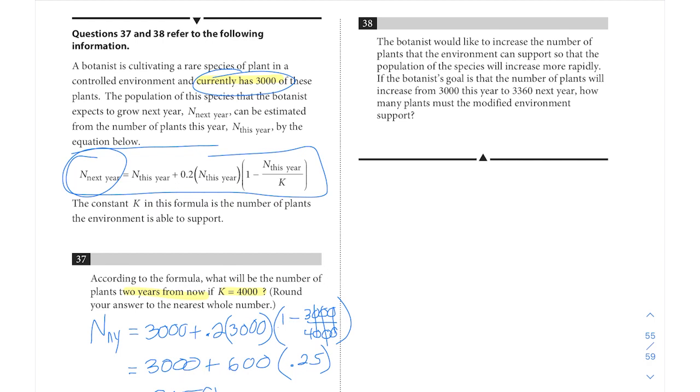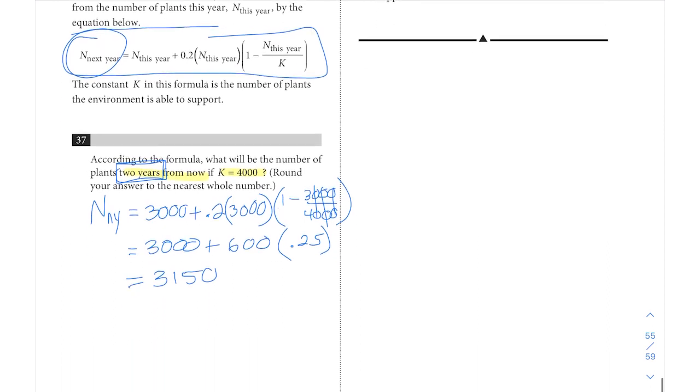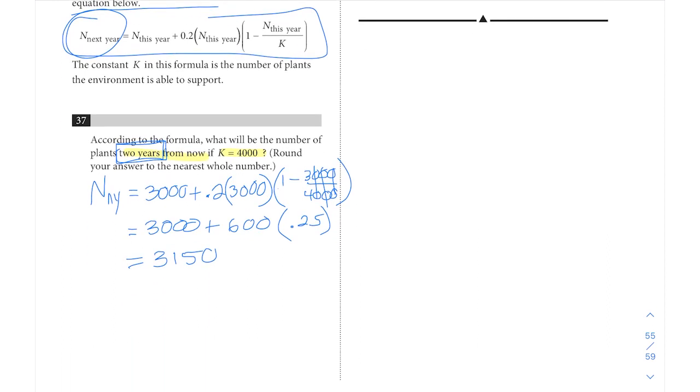But we're not done, and I can't tell you how often it is that students will just circle this as their answer, submit it, and move on. But remember, they wanted to know in the question two years from now. And since the equation they give us tells us next year, which is one year from now, we're going to basically do that same equation one more time. For next year after that, now we're going to use 3,150 as the starting amount.